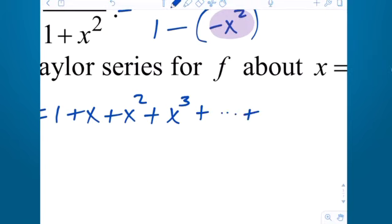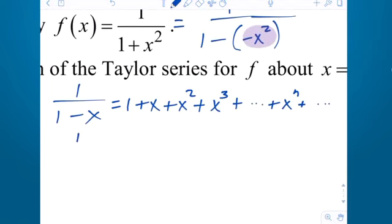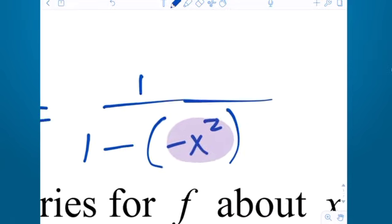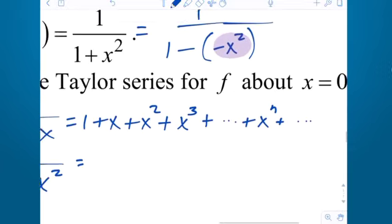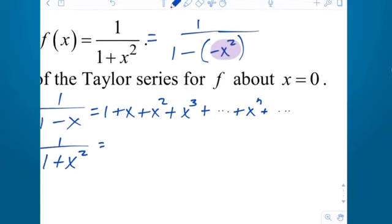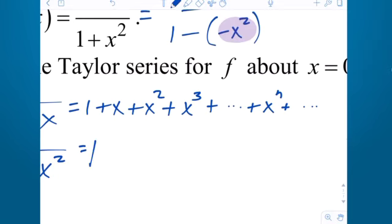The general term is x to the n — remember we put plus dot dot dot after that. Now beneath that, for 1 over (1 + x²), having already done the algebra, I'm going to replace every x with negative x squared. So I get 1, then minus x².